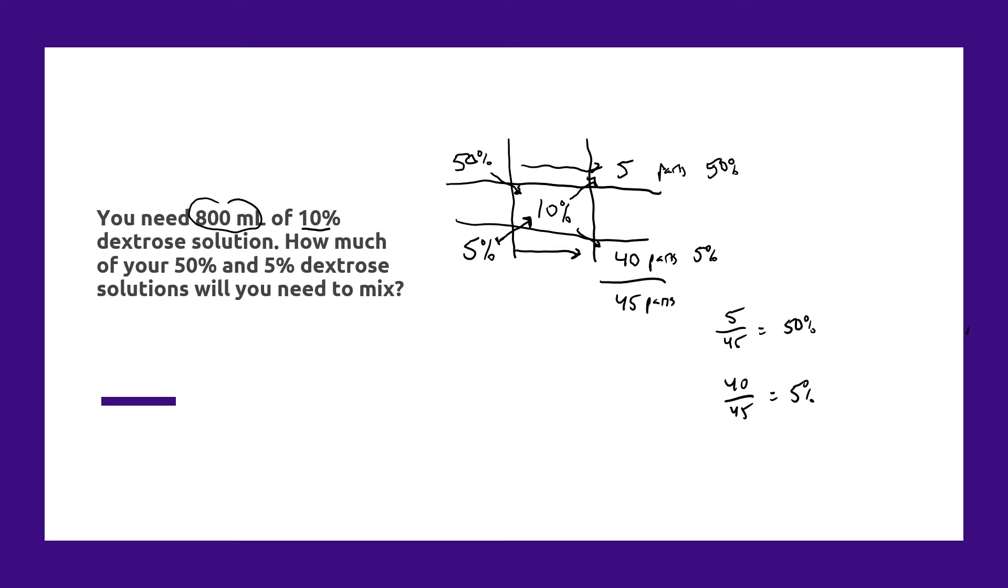So now to figure out how much of each we're going to need for 800 milliliters of our target 10% solution, we can take that total volume, and to figure out the 50% component, we multiply it by the fraction for that 50%, which is going to be 5 over 45.